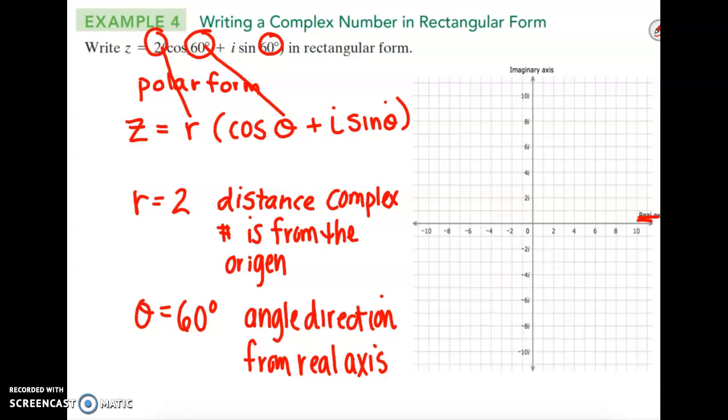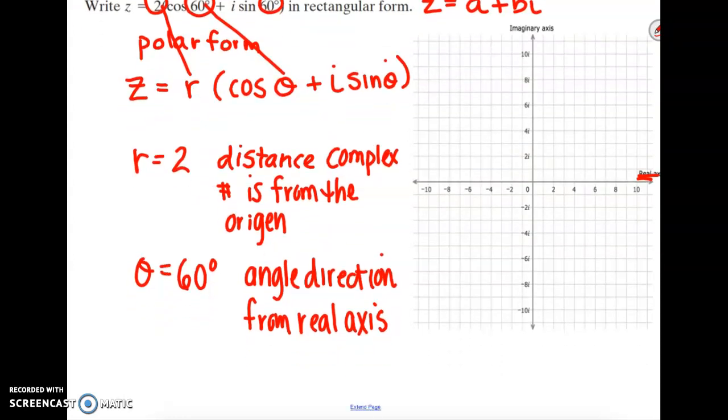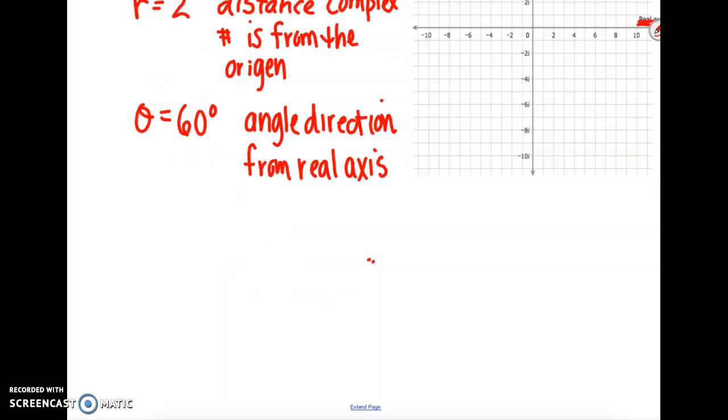So we're going to go ahead and convert this back to rectangular form. Remember, rectangular form is z equals a plus bi. We want to change it back to that. So how we do that is here's your original polar form equation: 2 times cosine of 60 degrees plus i sine of 60 degrees.